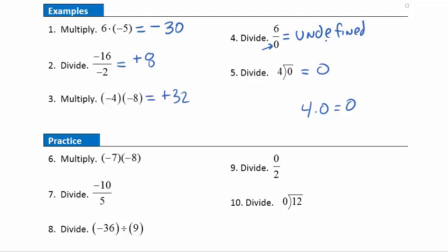Question 6: multiplying two negatives gives us a positive answer. 7 times 8 gives us 56, so positive 56. Question 7: different signs, so we're going to get a negative answer. 10 divided by 5 is 2, so negative 2.